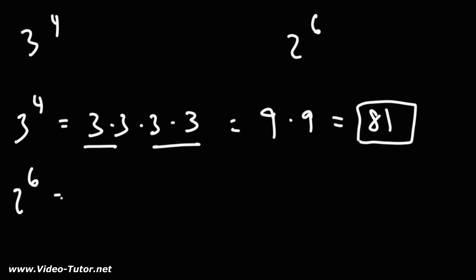Now what about 2 to the 6th power? So we're multiplying six 2's together. Now we know that 2 times 2 is 4, times 2 is 8. So we can replace three 2's with an 8.